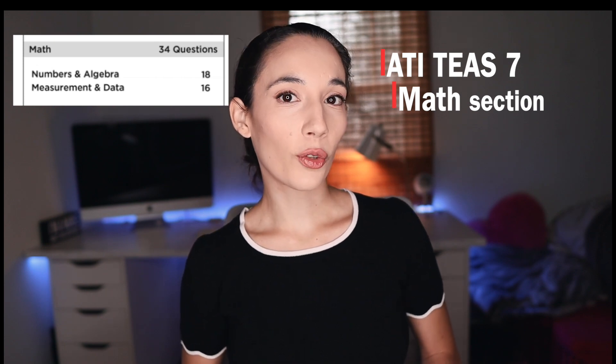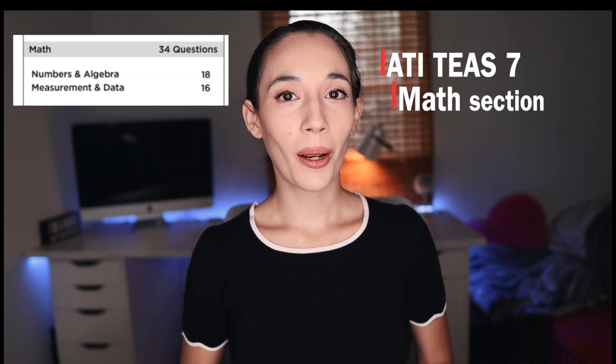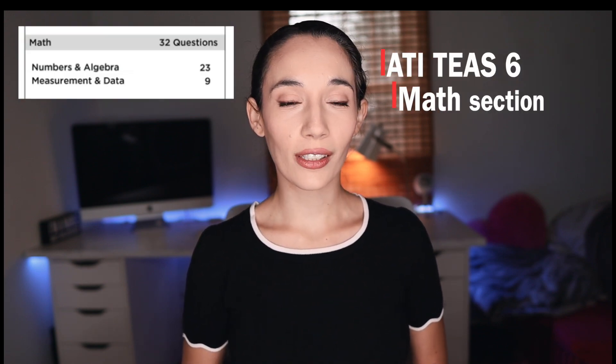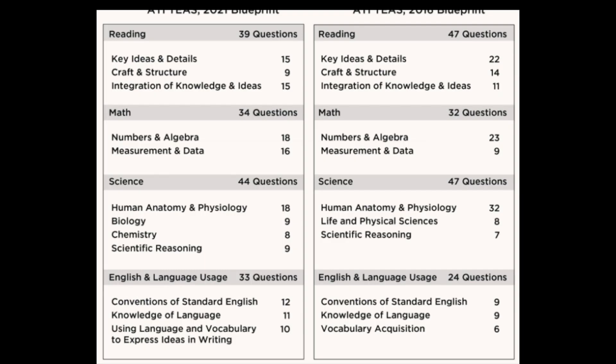The science section has the most significant change. Moving on to the math section, you're still being tested on the same material — numbers and algebra, and measurements and data. On the ATI TEAS 7, there are 18 numbers and algebra questions and 16 measurements and data questions. On the ATI TEAS 6, there are 23 numbers and algebra questions and 9 measurement and data questions. So they've decreased numbers and algebra and increased measurements and data — not too much of a change.